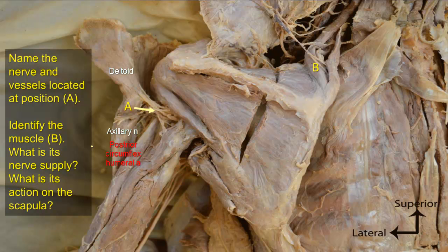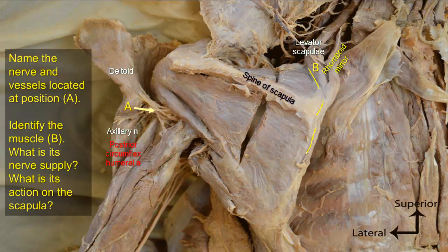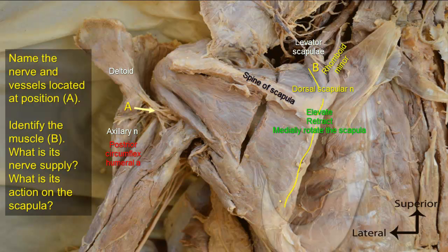Identify muscle B, its nerve supply, and its action on the scapula. B is levator scapulae, which together with rhomboid minor and rhomboid major connects the scapula to the spine. Levator scapulae connects the superior part of the medial border of the scapula to the transverse processes of cervical vertebrae. Rhomboid minor attaches at the root of the scapular spine, and rhomboid major attaches to the medial border inferior to the scapular spine. All three muscles are supplied by the dorsal scapular nerve and act to elevate, retract, and medially rotate the scapula so the glenoid cavity faces downwards.